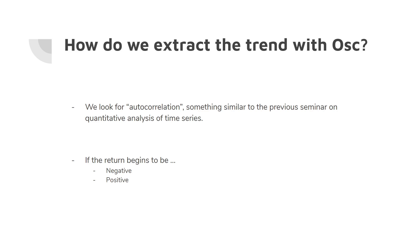How can we extract the trend component with a certain precision using an oscillator? This is a simple question with a more complicated answer than you might imagine. We are going to look for autocorrelation — meaning we want to check if previous returns have any positive or negative correlation with future prices. This is similar to our previous video on time series integration for trend following systems, but we will have some nuances regarding how we use this kind of indicator.